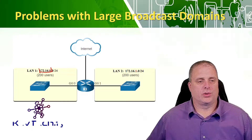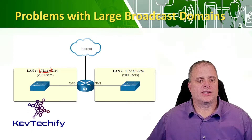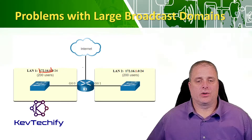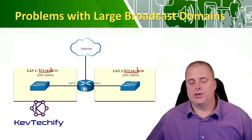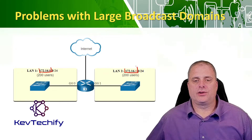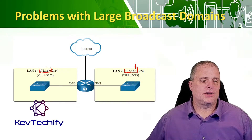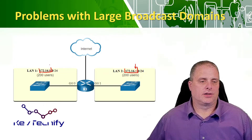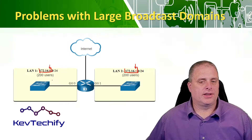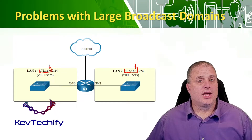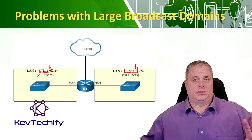On LAN 2, the network portion is also the first three octets. Notice that third octet — it's different. That different third octet in the network portion makes these two separate networks.